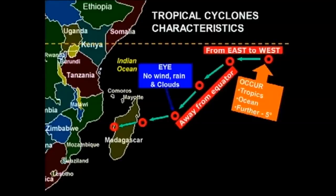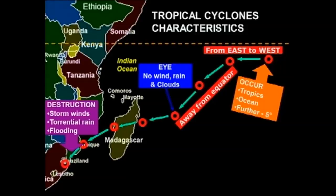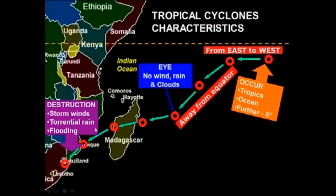As the tropical cyclone moves and hits Africa, it causes destruction by means of storm winds, torrential rain, and flooding. Here we've got the island of Madagascar. As the tropical cyclone moves over Madagascar, Madagascar actually protects Africa from these tropical cyclones. As it moves over Madagascar, it starts to damage Madagascar by storm winds, torrential rains, and flooding. Then in the Mozambique channel, the area is too small and the water is too cold for the cyclone to pick up more strength, water vapor, or heat. So Madagascar is very important to Africa as it protects Africa from tropical cyclones.